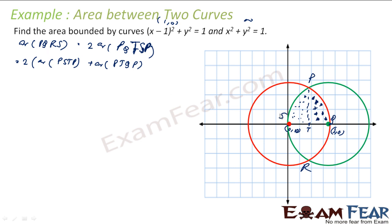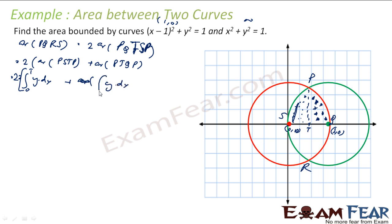For this area, if I take a strip at x and vary x, this is nothing but 2 times the integration of y_dot dx where x varies from 0 to T, plus the integration of y_red dx from T to 1. This is y_green and this is y_red.